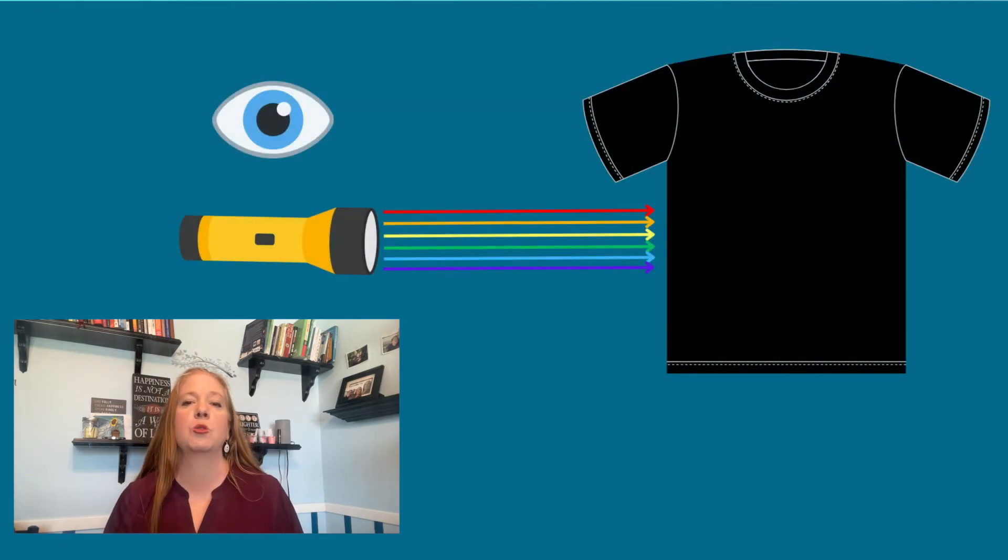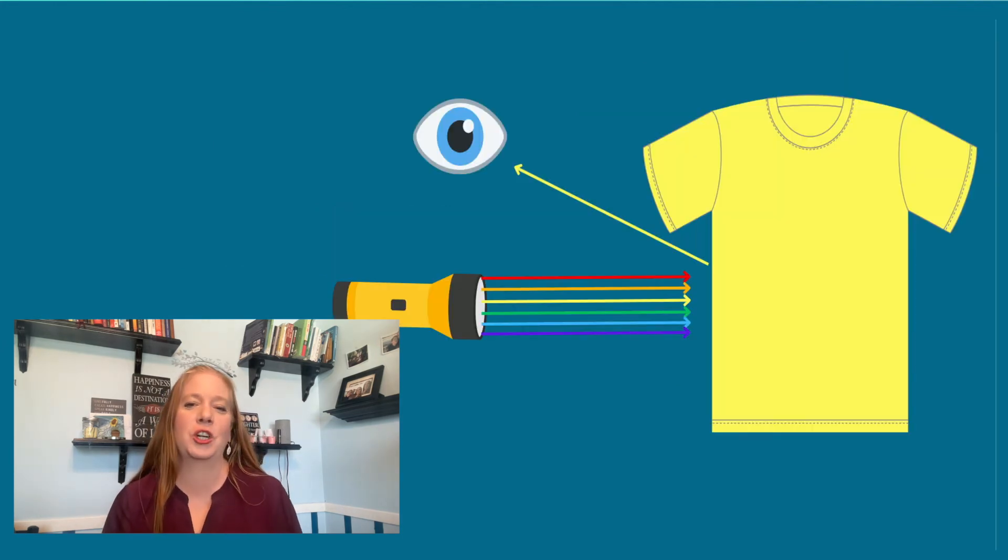Black materials absorb all of the light waves. This yellow shirt is absorbing all the light colors except for yellow light. The yellow is being reflected.